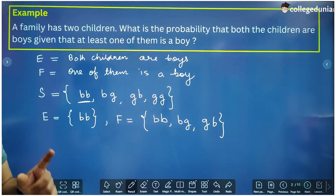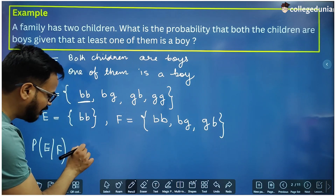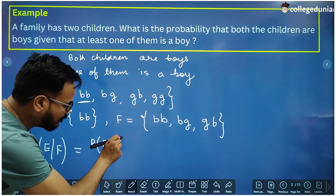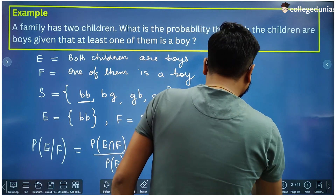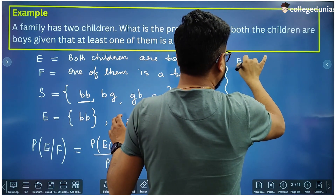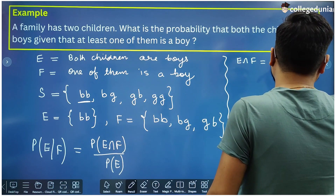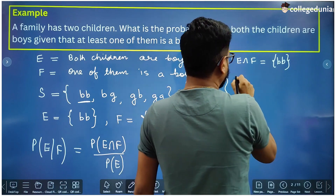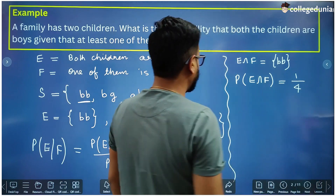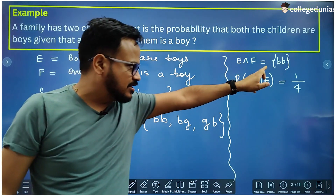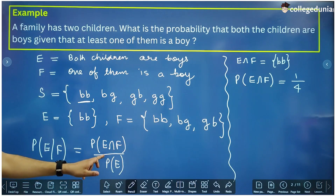We are supposed to find P(E|F). The formula is P(E ∩ F) divided by P(F). The intersection of E and F is {BB} — the only common element. So P(E ∩ F) = 1/4, since there are 4 elements in the sample space and only 1 in this event.